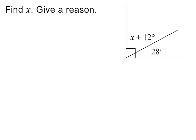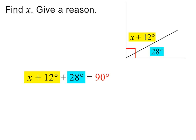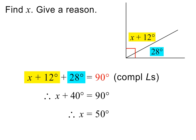Here is the next question. Please pause to read it. We are given that this whole angle is 90 degrees. We can therefore say that the sum of these angles is 90 degrees, and the reason is they are complementary angles. We then add 12 degrees and 28 degrees to get X plus 40 degrees on the left. X is therefore equal to 50 degrees. Please pause to check my working.